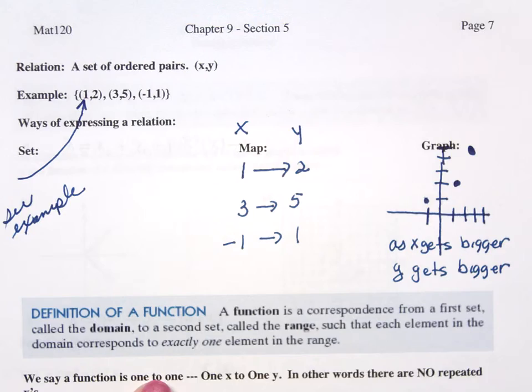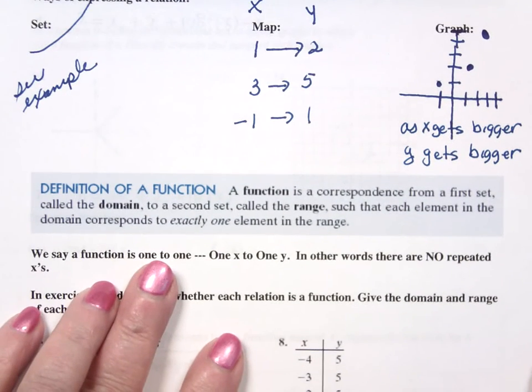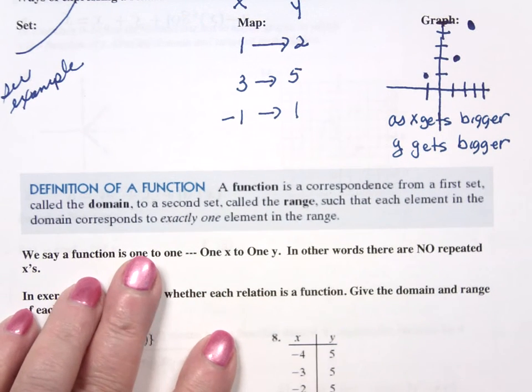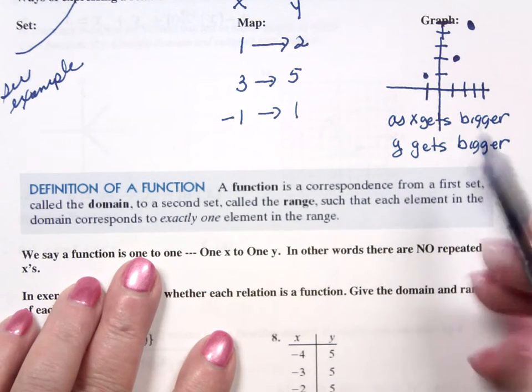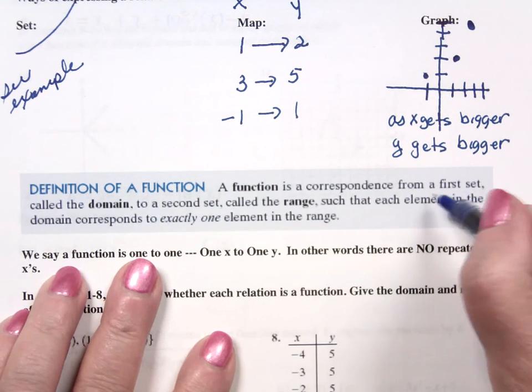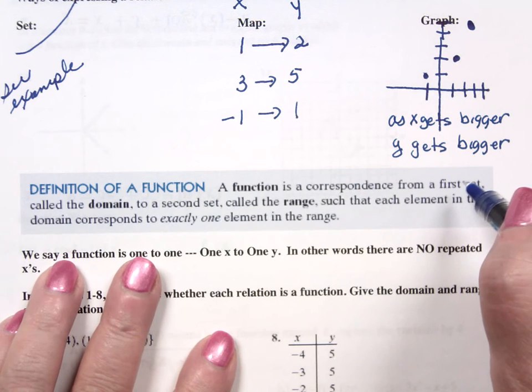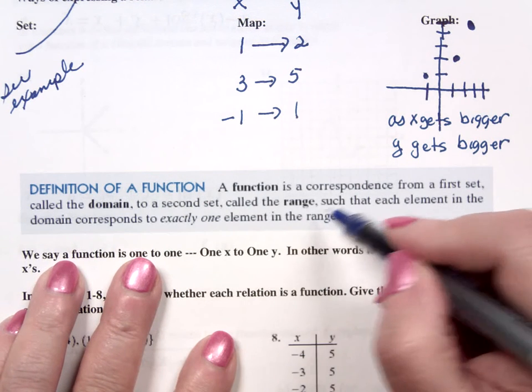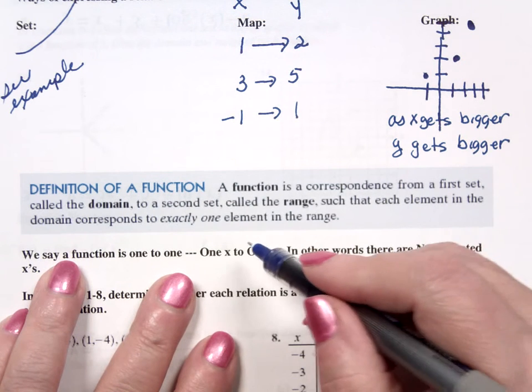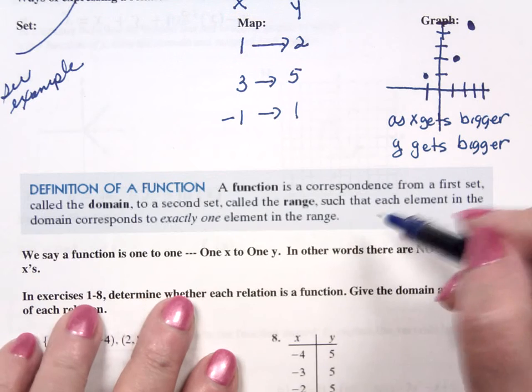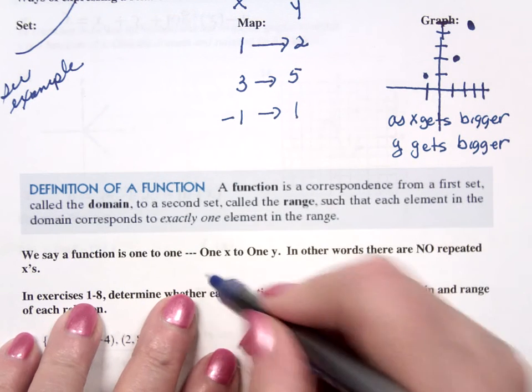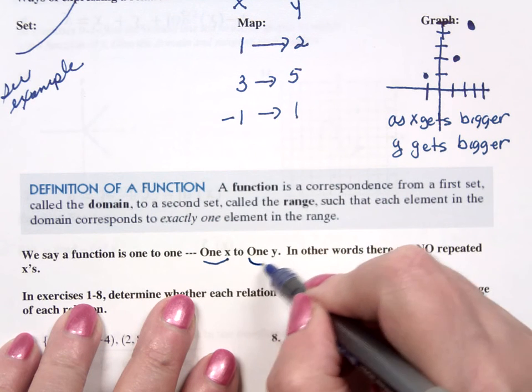Now, a function is a relation, is a correspondence from a first set called the domain to a second set called the range, such that each element in the domain corresponds to exactly one element in the range. We say a function is one to one. Namely, one X is related to only one Y.